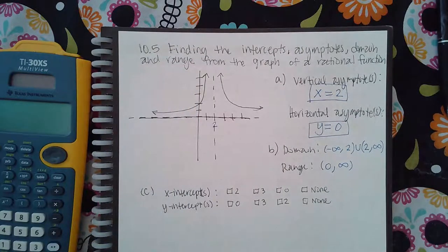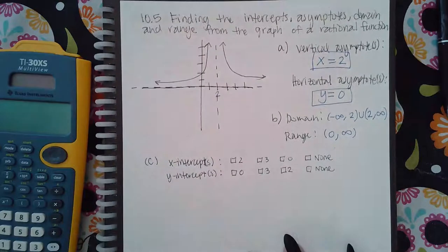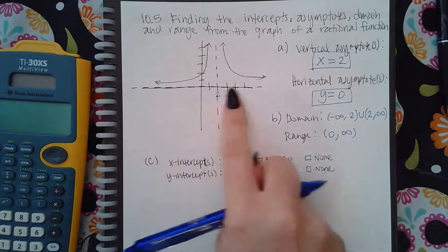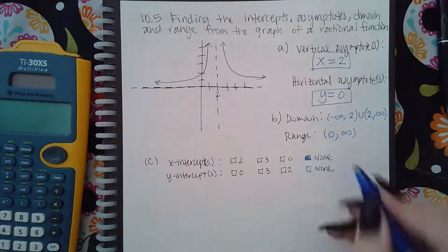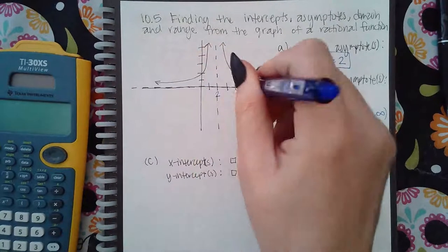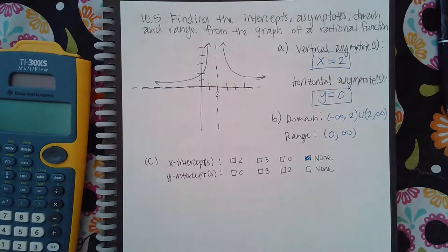It says what are the x-intercepts. If you notice, it does not ever touch the x-axis, so in this case there are no x-intercepts. If you do have spots where it touches the x-axis, then you need to indicate those.